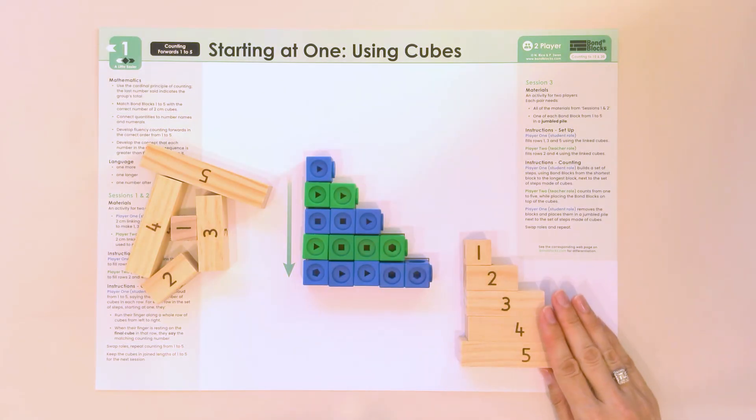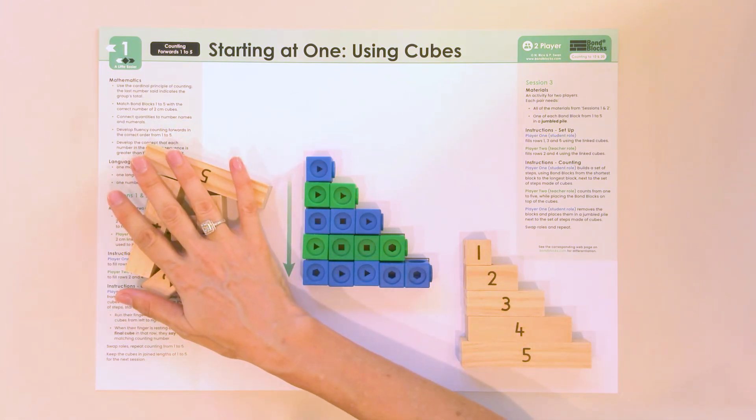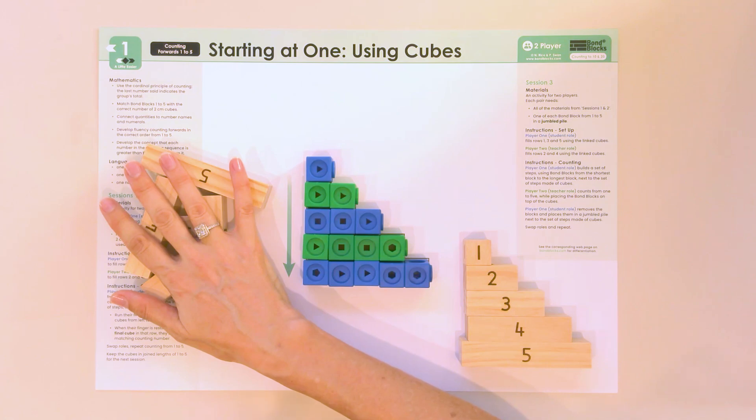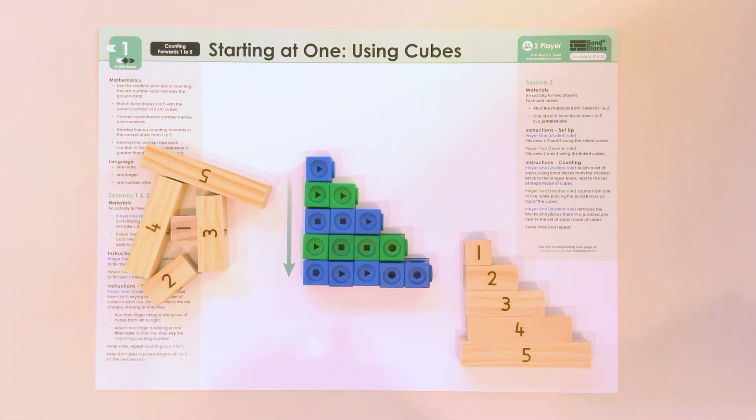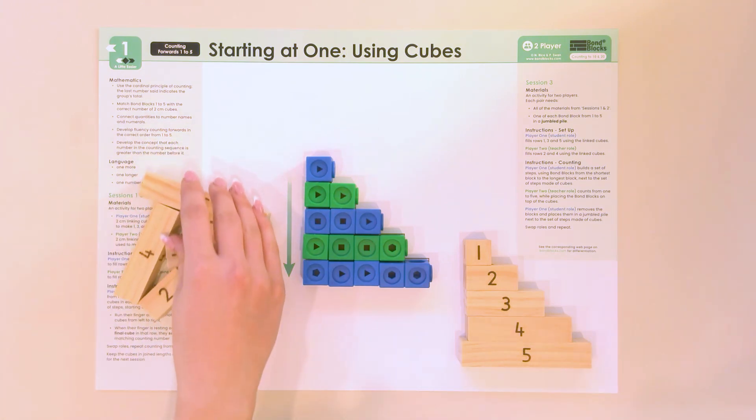We're going to keep this set of steps here so we can check that our numbers are up the correct way. You're player 1. Can you build a set of steps in front of you, starting with the shortest block and filling down to the longest block? It should look like this when you're finished.